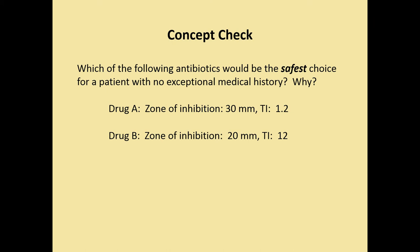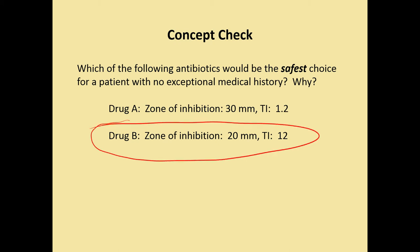Which of the following antibiotics would be the safest choice for a patient with no exceptional medical history? Drug A has a zone of inhibition of 30 millimeters with a therapeutic index of 1.2. Drug B has a zone of inhibition of 20 millimeters with a therapeutic index of 12. Even though Drug A is really effective against the organism, its therapeutic index is really low — it's potentially toxic at that dosage. It's safer to choose Drug B: even though it has a smaller zone of inhibition, the therapeutic index is higher, so it's the safer choice.